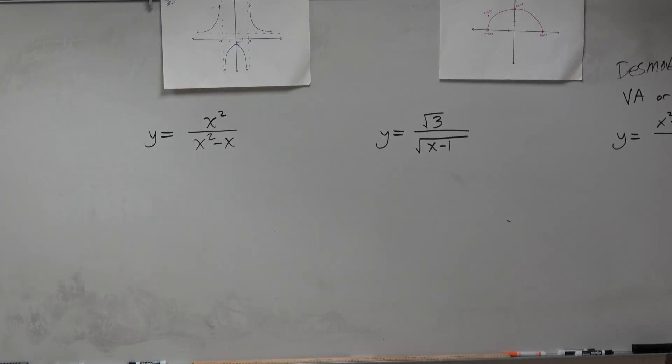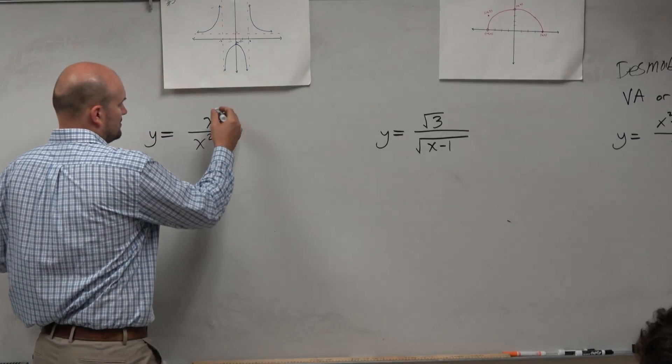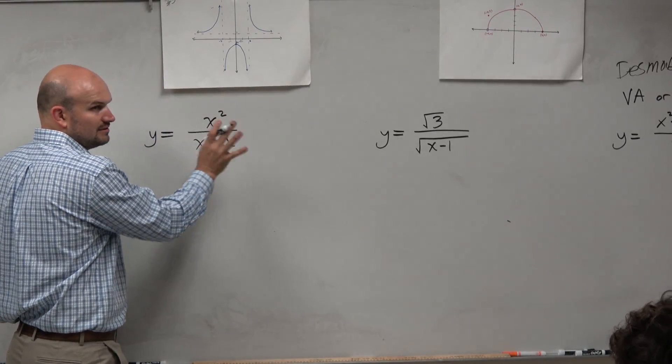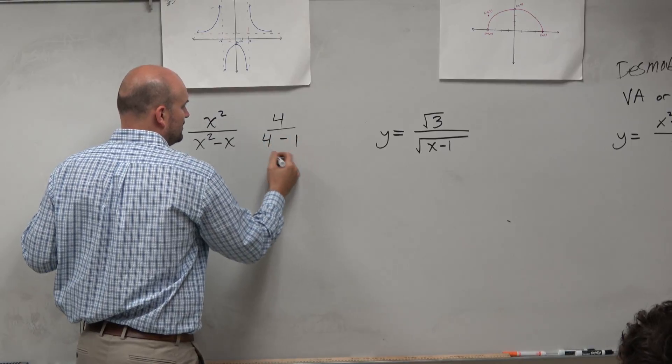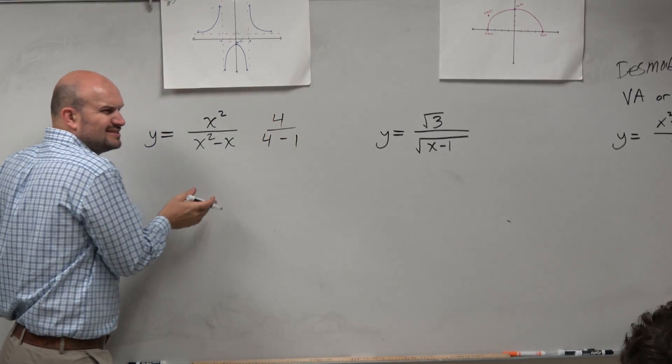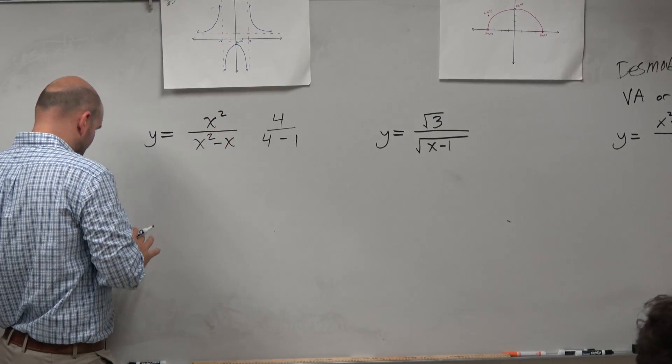The next example, please don't do this. Don't say, oh, those divide out. No, no, no, don't do it. Because does this make sense? 4 minus 4 minus 1, you can't just divide those out. That doesn't make any sense, okay? So don't just divide that out.